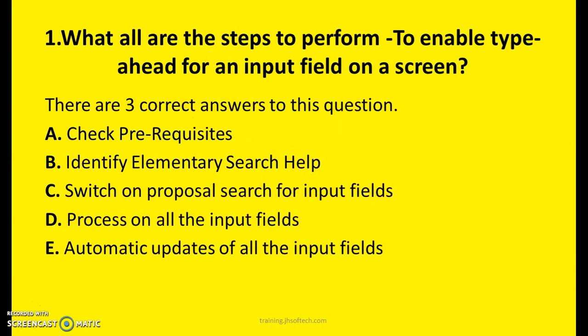Question One: What are all the steps to perform to enable type-ahead for an input field on a screen? Three correct answers are needed. A: Check prerequisites. B: Identify elementary search help. C: Switch on proposal search for input fields. D: Process on all the input fields. E: Automatic updates of all the input fields. I suggest you be ready with pen and paper, write your answers, then cross-check with the right answers in the next slide.